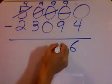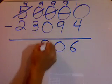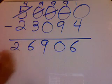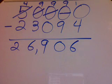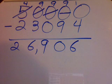So six, six plus four is ten. You need in here zero. You need in here nine. And you need in here six. And you need in here two. And your answer is twenty-six thousand, nine hundred six.